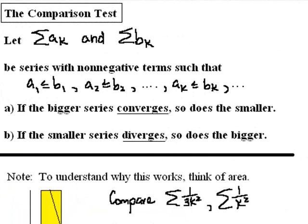In this segment, we're going to be discussing the comparison test. The comparison test is just another method for determining whether or proving whether a series is going to converge or not. It's called the comparison test because we're going to take the series we're interested in and compare it to another one.